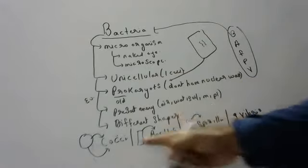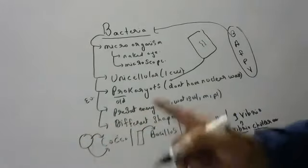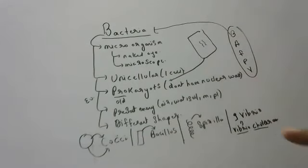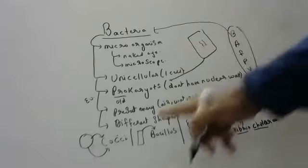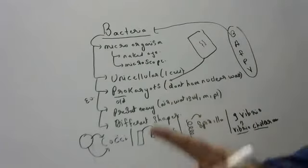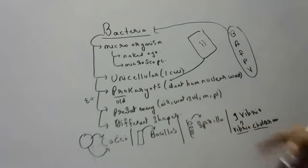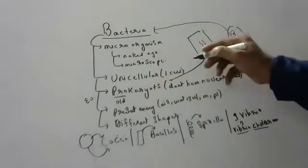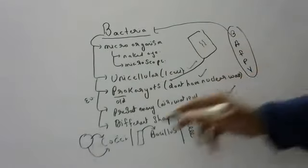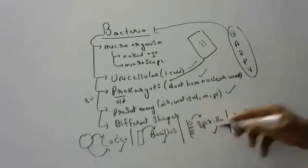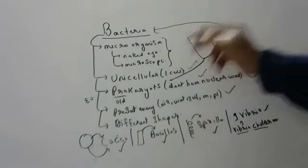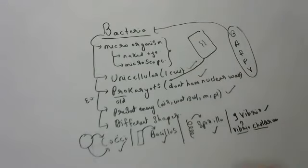You should draw the different shapes: round-shaped bacteria are called Cocci, rod-shaped bacteria are called Bacillus, spring-shaped bacteria are called Spirillum, and comma-shaped bacteria are called Vibrio. Also write that they are microorganisms — very, very small — and we cannot see them with the naked eye; we have to use a compound microscope or simple microscope.